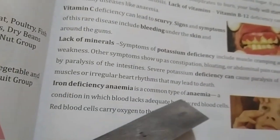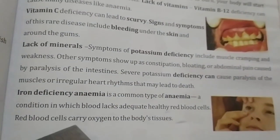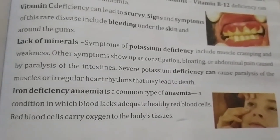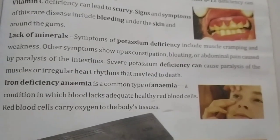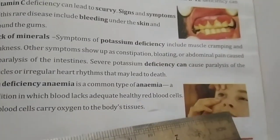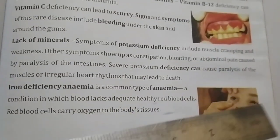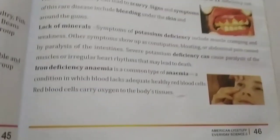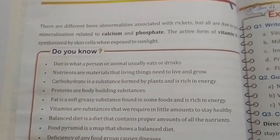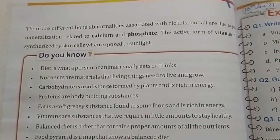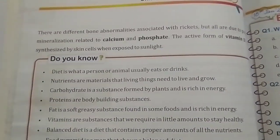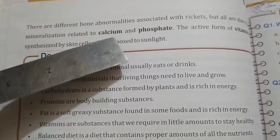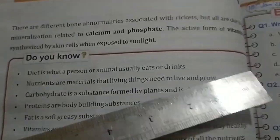Iron deficiency anemia is a common type of anemia — a condition in which the blood lacks adequate healthy red blood cells. Red blood cells carry oxygen to the body tissue. Eyesight is also disturbed if you are not taking vitamin A properly. There are different bone abnormalities caused by low intake of calcium and phosphate.